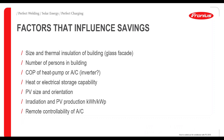Different factors influence these savings. The thermal situation of the household matters — for example, a glass facade means high demand for room cooling. The number of persons in a building is also relevant; in commercial buildings, more people means less heating is needed. The efficiency of the heat pump or air conditioning system is also very influential. PV size and orientation, as well as irradiation and total PV energy production, all affect the savings.